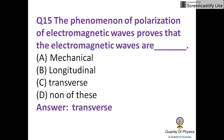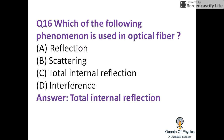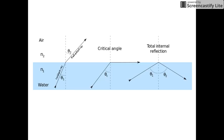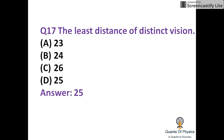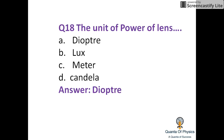The phenomenon of polarization of electromagnetic waves proves that they are transverse in nature. Optical fiber uses total internal reflection (TIR). Here is a diagram showing total internal reflection of light. The least distance of distinct vision is 25 centimeters.